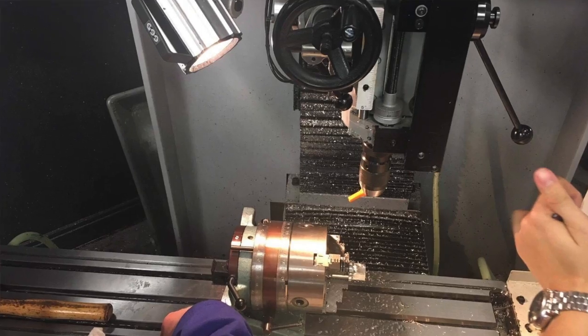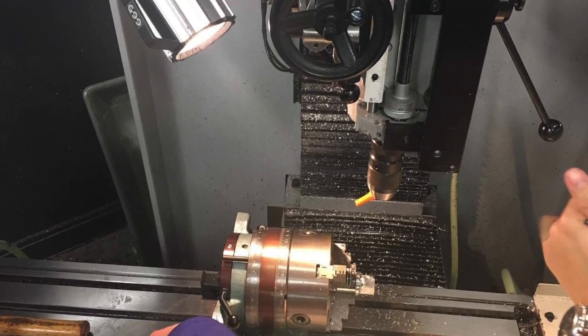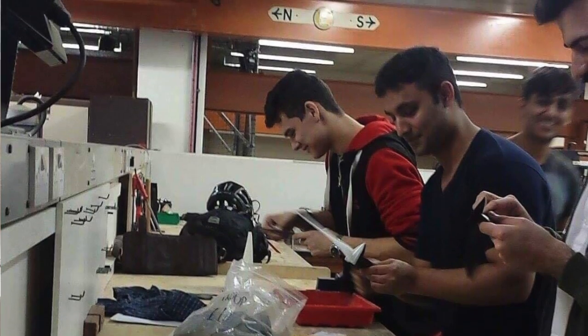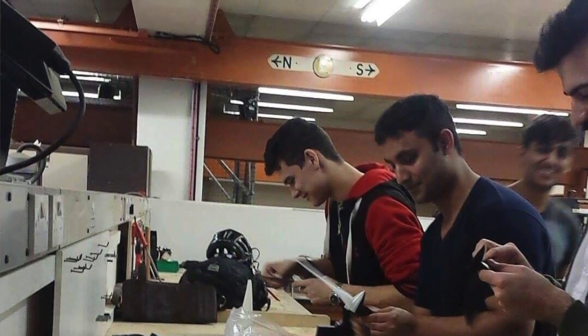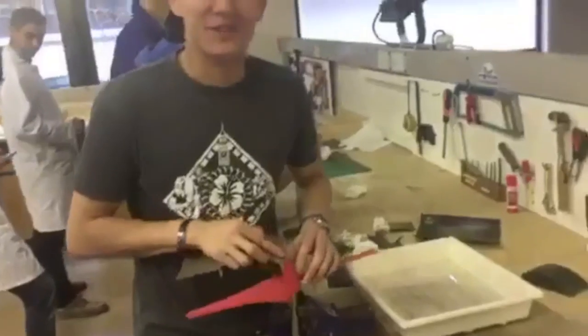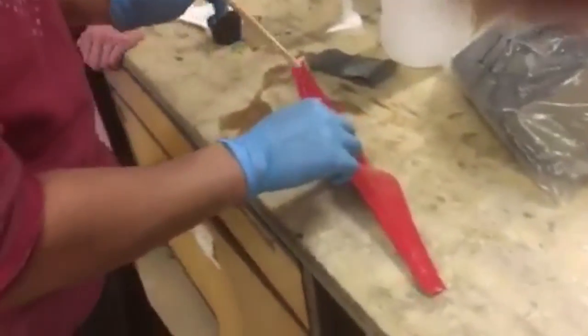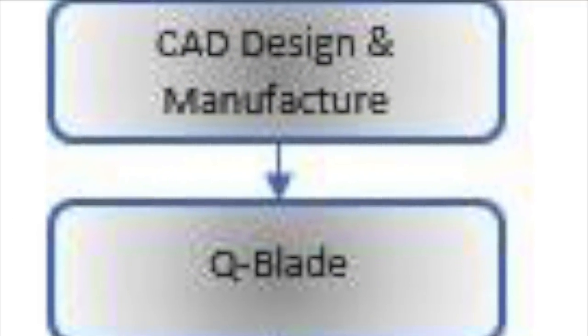As the design was completed in Creo, this helped us manufacture the blade quickly. Surface finishes such as sanding with wet-and-dry paper and a coating of acetone were applied for a smoother finish.